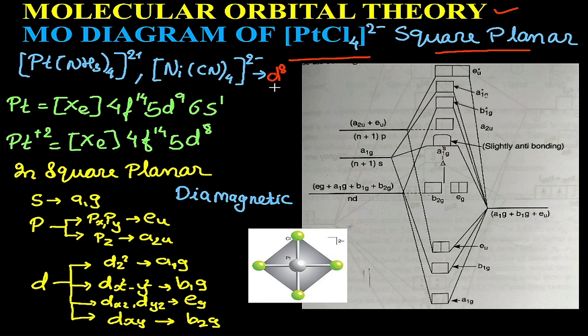Hence, all the electrons will be paired and the molecules are diamagnetic in nature.